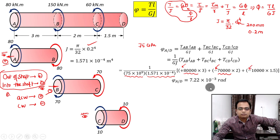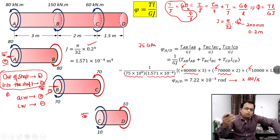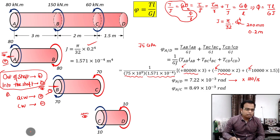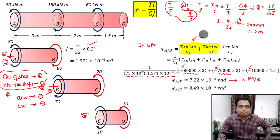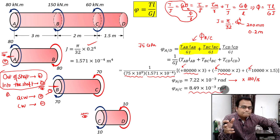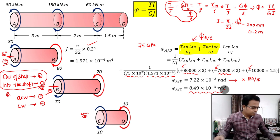This gives you the angle of twist at A with respect to D in radians. If you want the corresponding value in degrees, simply multiply by 180/π. Secondly, for the angle of twist at A with respect to C, you only need to consider portions AB and BC — from A to C only. Apply the formula for just those two portions and you get φ_A relative to C, which works out as 8.49 × 10⁻³ radians. Now you have understood how to work out problems based on angle of twist.